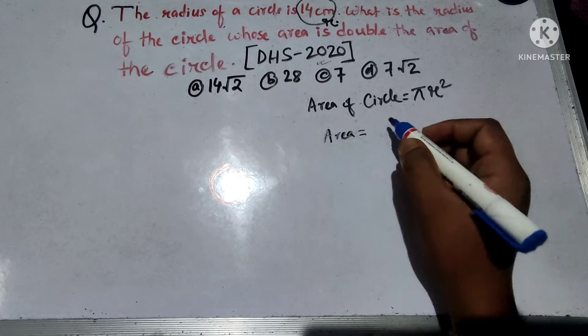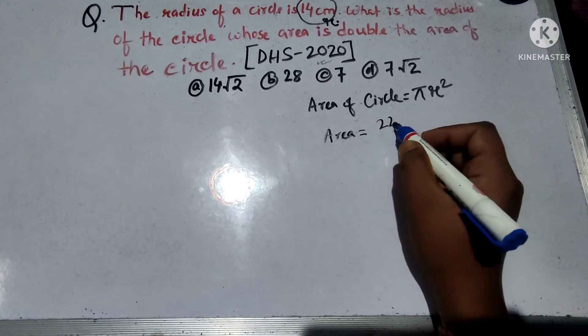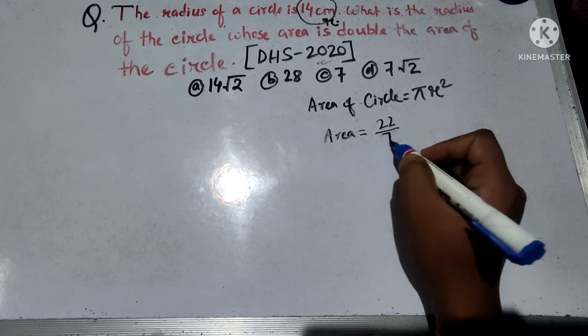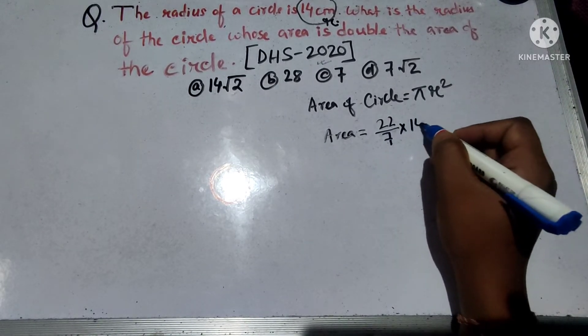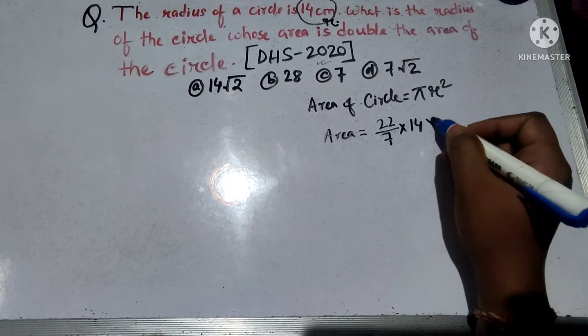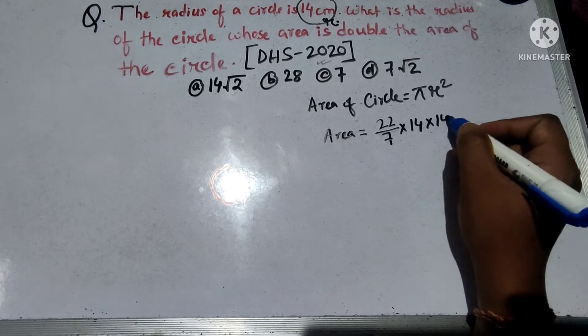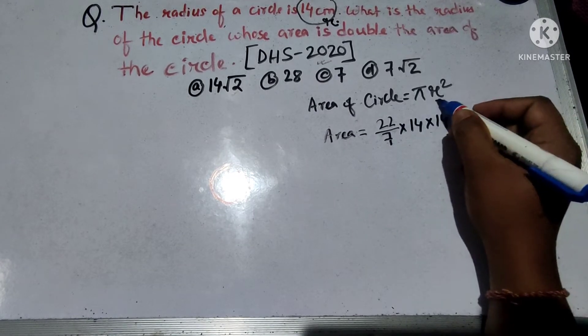Area is equal to π, using 22 by 7, into r, and 14 into 14.